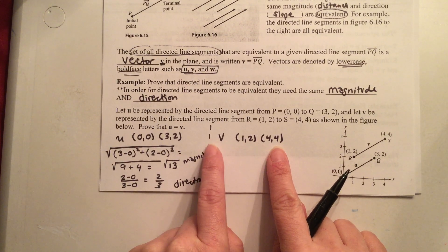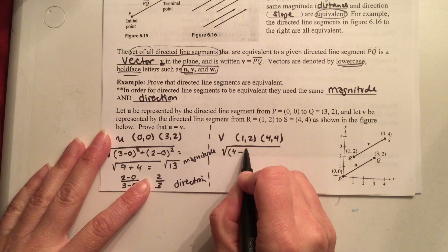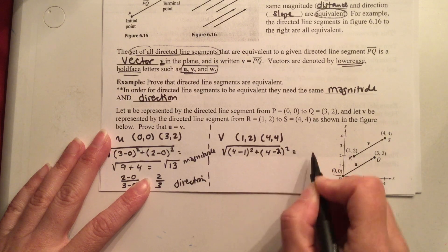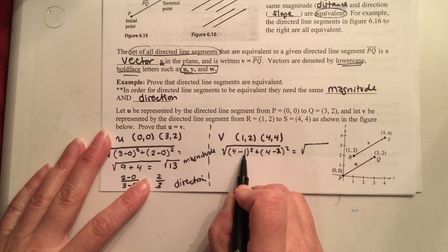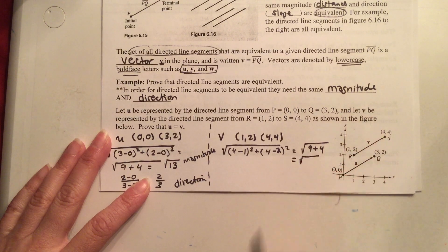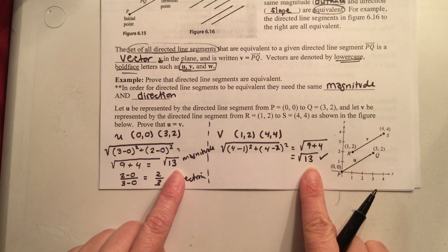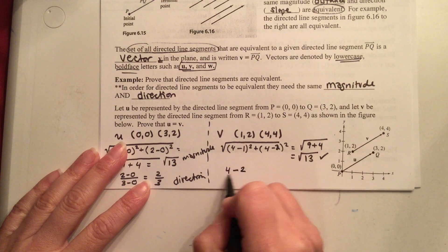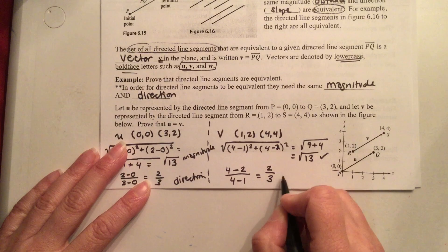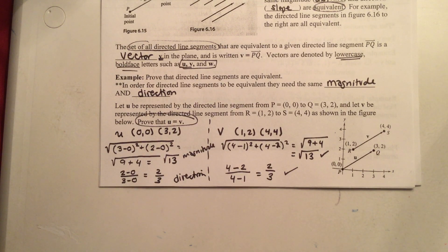Now to find the direction — the direction is the slope: second y minus first y over second x minus first x. This vector has a direction of 2/3. It has a magnitude of the square root of 13. For vector V, distance formula: (4 minus 1) squared plus (4 minus 2) squared = 9 + 4, magnitude is square root of 13. Direction: (4 minus 2) over (4 minus 1) = 2/3. Same magnitude, same direction — you just proved vector U and vector V are equivalent.